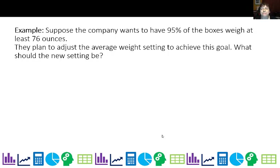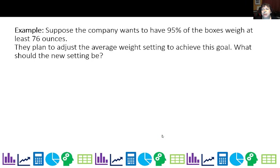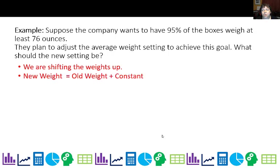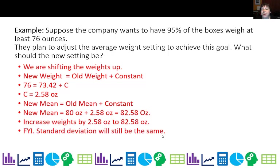Now let's say the company wants 95% of boxes to weigh at least 76 ounces — that's a bit more than the 73.42 we just found. So we're shifting the weights up. The new weight equals the old weight plus a constant: new weight 76 minus old weight 73.42 means a constant of 2.58. The new mean equals the old mean plus that constant — 80 plus 2.58 is 82.58 ounces. The standard deviation stays the same because shifting by a constant doesn't change the spread.